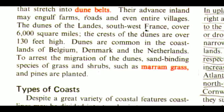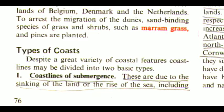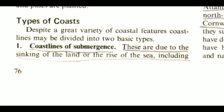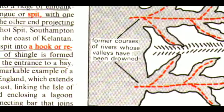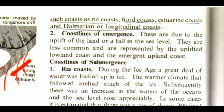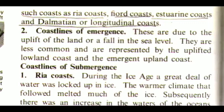Now we are going to read types of coasts. Despite a great variety of coastal features, coastlines may be divided into two basic types. The first one is coastlines of submergence. These are due to the sinking of the land or the rise of the sea, including such coasts as Ria Coast, Fjord Coast, Estuarine Coast, and Dalmatian or Pacific longitudinal coasts. The second one is coastlines of emergence. These are due to the uplift of the land or a fall in the sea level. They are less common and are represented by the uplifted lowland coast and the emergent upland coast.